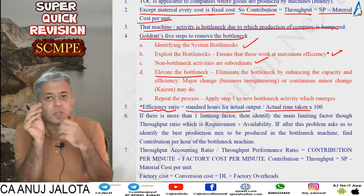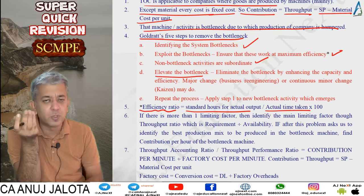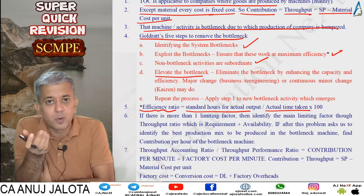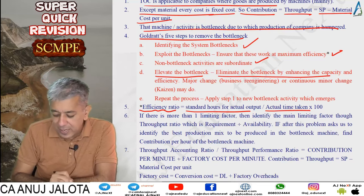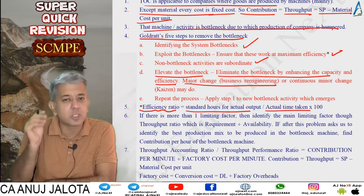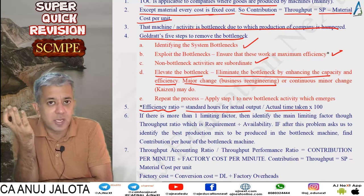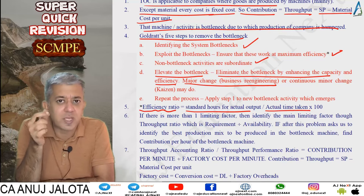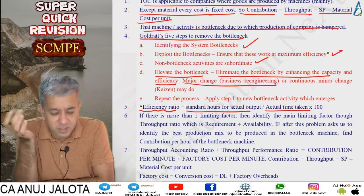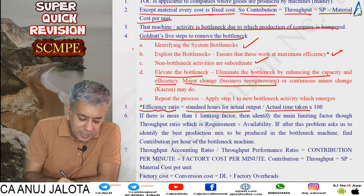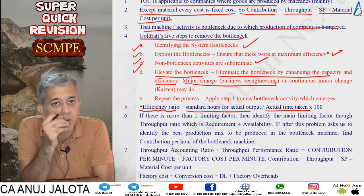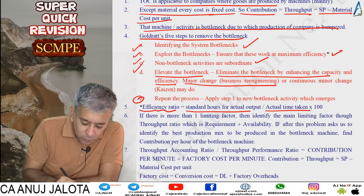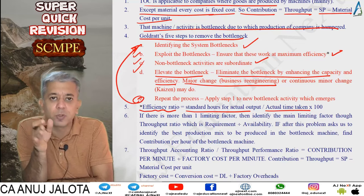Third step: subordinate non-bottleneck machines — resolve their issues and poori company ka problem resolve ho jayega. Fourth step: elevate the bottleneck — eliminate it by enhancing capacity and efficiency. Major changes like getting a new machine with better technology is called business re-engineering. Smaller changes like replacing a part to improve efficiency is called kaizen costing. If after removing a bottleneck another machine becomes the new bottleneck, go back to step one and repeat the process.